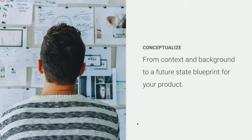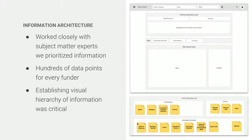Moving on to the conceptualization design phase: because we're dealing with really robust data, there was a strong need to ensure that information was prioritized. Working with our subject matter experts, we started to build a visual system around groupings of information, setting buckets and dropping in all these specific data points in groupings, so that we could start to build the UI around prioritization of information. We workshopped this directly in Lucidchart with the client.